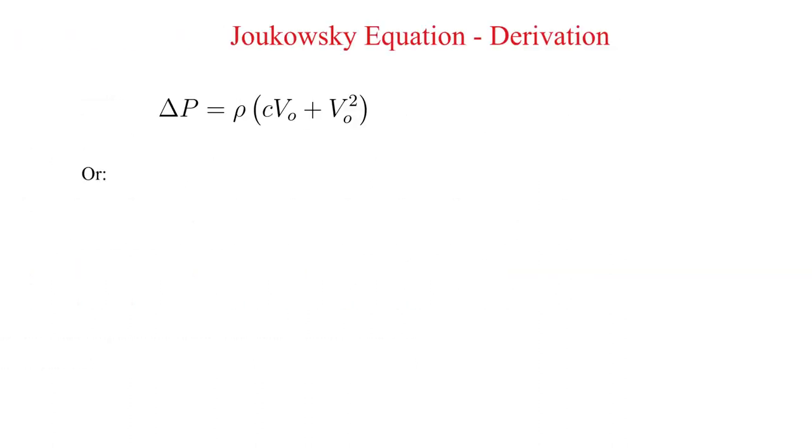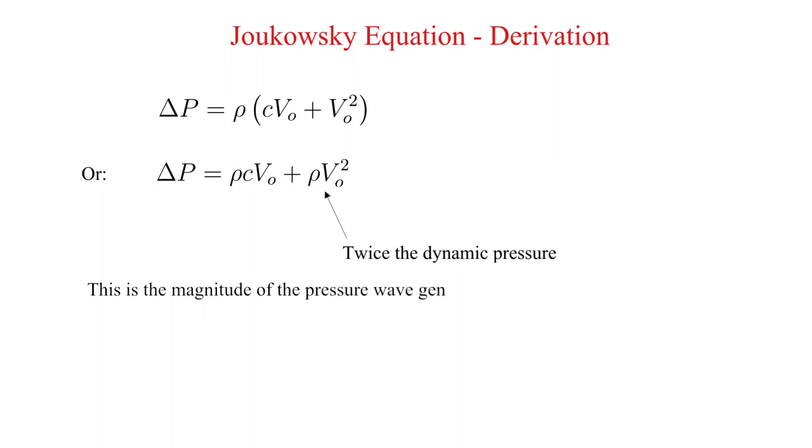Let's expand this equation. We get delta P is equal to rho times c times V0 plus rho times V0 squared. Notice that the second term is twice the dynamic pressure. This expression is the magnitude of the pressure wave generated following an instantaneous closure of a valve with an initial velocity of V0. However, this is not the Joukowsky equation.